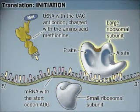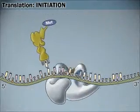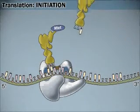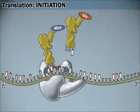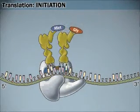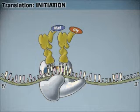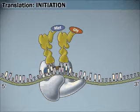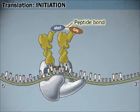Then the large ribosomal subunit joins. The second charged tRNA joins this complex, binding the appropriate codon. A peptide linkage forms between the two amino acids, and the first tRNA is released.